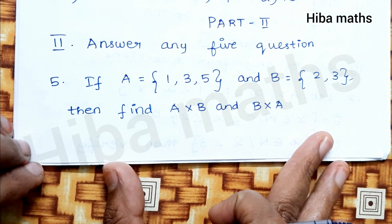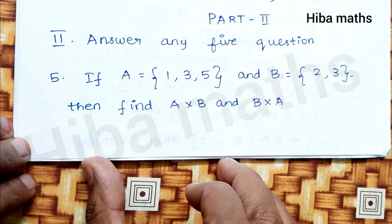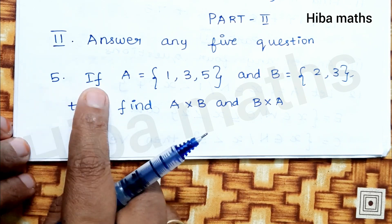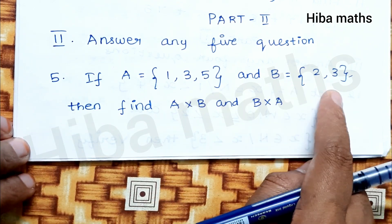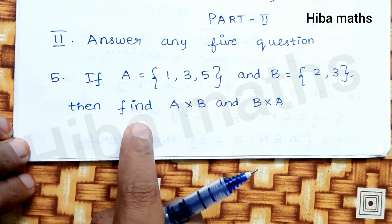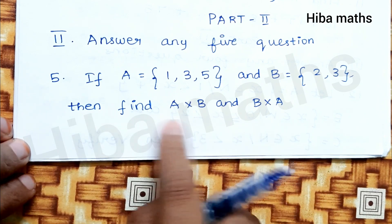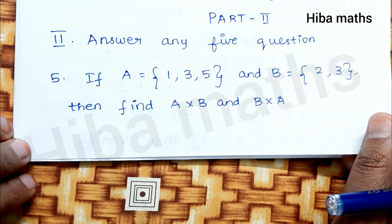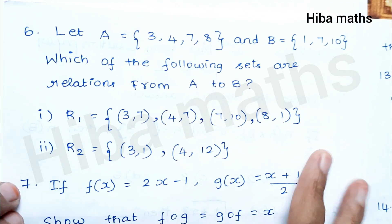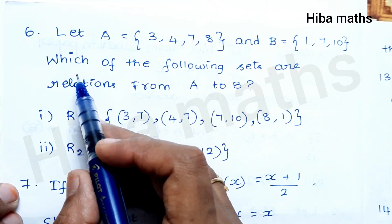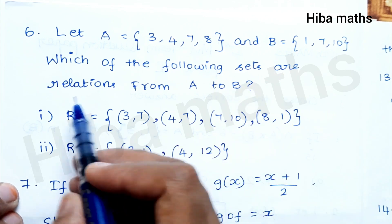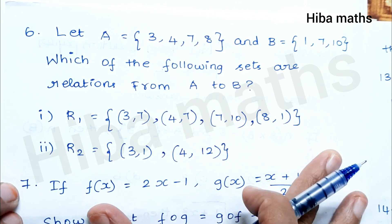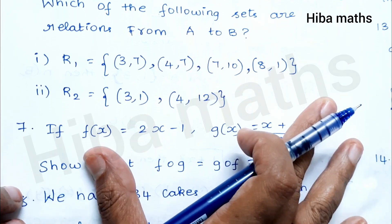Part 2: Answer any 5 questions. If A = {1, 3, 5} and B = {2, 3}, find A×B and B×A. It is easy to solve A×B and B×A. Let A = B; find which of the following sets are relations from A to B. Look at A×B and B×A.